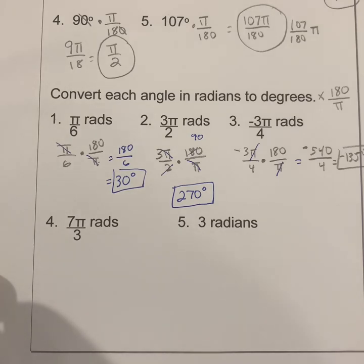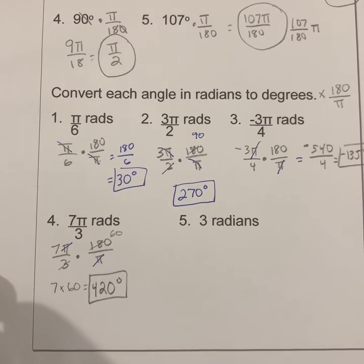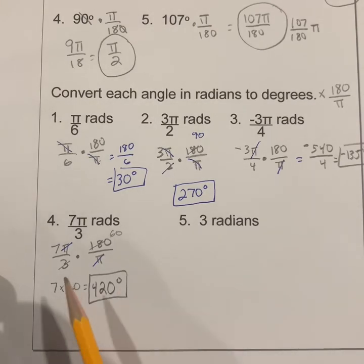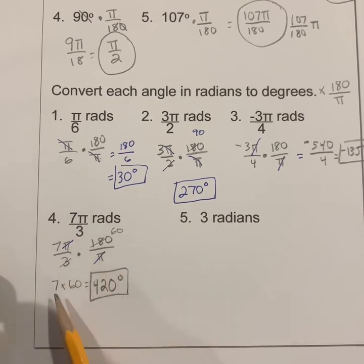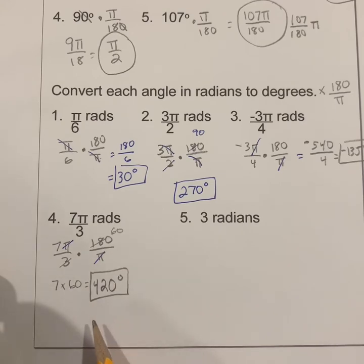For number four, take 7π over 3, multiply it by 180 over π, cancel the π's, and since 3 goes into 180 sixty times, multiply 7 times 60, giving an answer of 420 degrees.